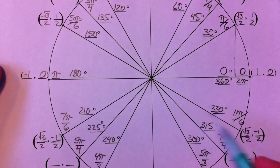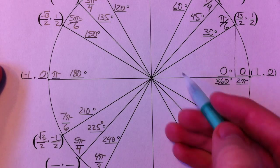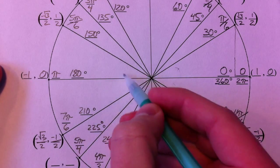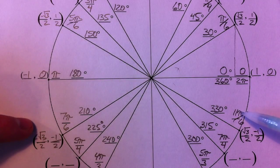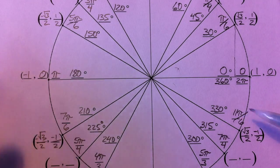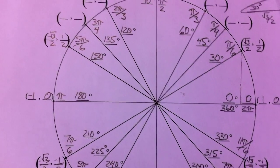So notice the 30, 150, 210, and 330. All of those that have the reference angle of 30 degrees all are based on the same coordinate, which is nice. The only thing that changes is the positive or the negative of it all.